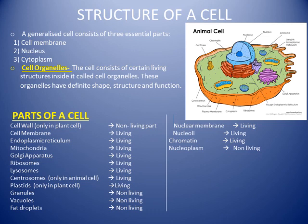Looking at the parts of the cell: the cell wall is present only in plant cells and is a non-living part. The cell membrane is the outer boundary. The endoplasmic reticulum — that orangish structure attached to the nucleus — exists in two forms: smooth endoplasmic reticulum and rough endoplasmic reticulum, which we will discuss in detail.